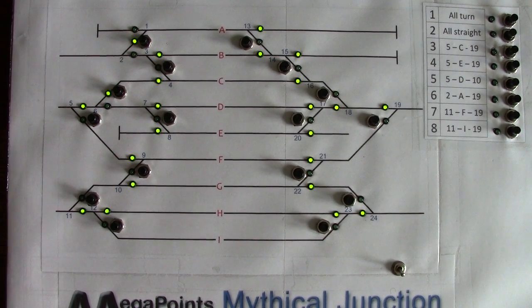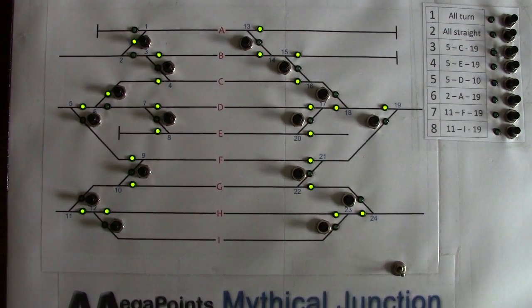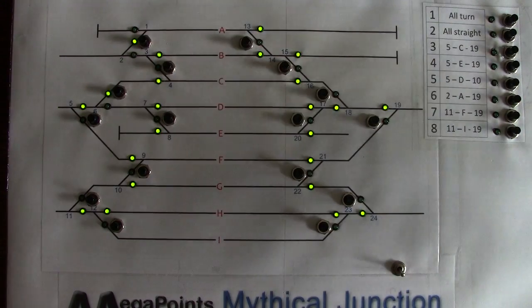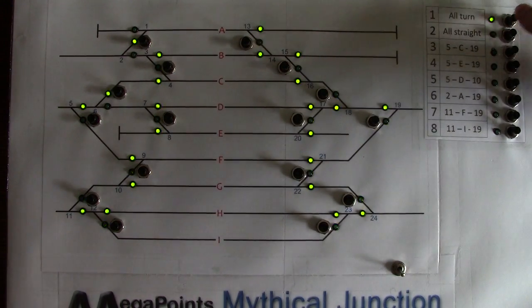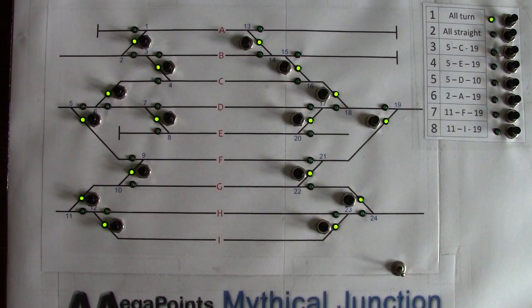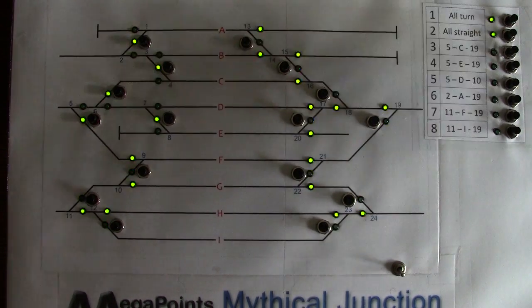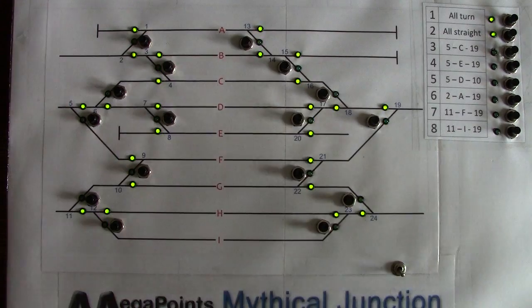eight buttons and these eight buttons control the routing engine, so I have eight routes I can select. For example, I can select everything to turn or I can set everything to straight ahead, or I can set